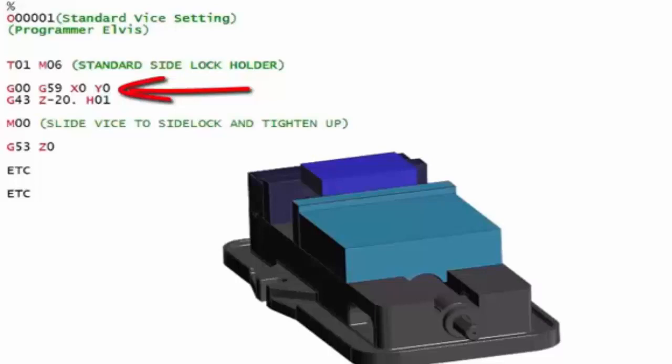You'd set that up and then obviously you'd have to save that for next time. All this program does is it picks up a standard side lock, which is the body of that side lock that you're going to push the vice against. It sends it to G59 X0 Y0 and brings the Z down. Then all you would do is slide the vice along those tenons into that point that you've decided, and then just bolt that vice up.